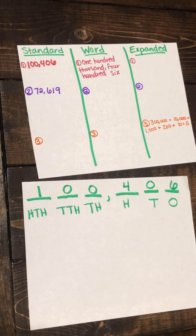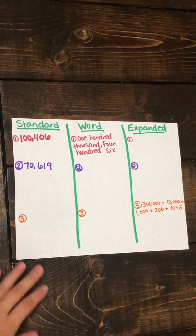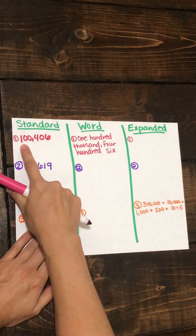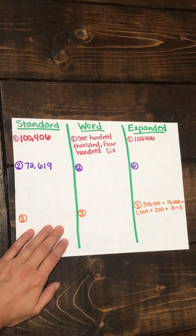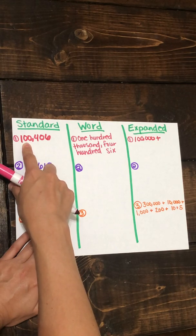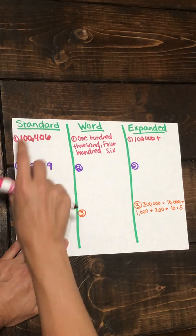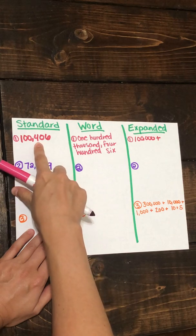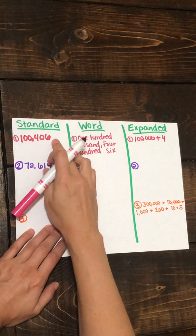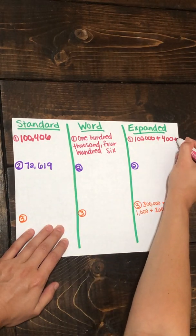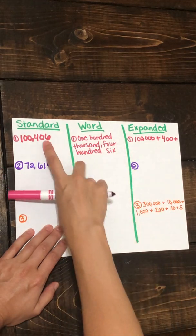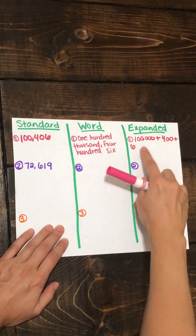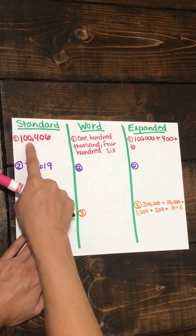Now for expanded form, let's look at our standard form to help us write it. Starting in our hundred thousands place, we have one in the hundred thousands place, everything else turned to zeros. We don't have a number in the ten thousands or thousands place, so we skip those. Our next value is four in the hundreds place — everything else gets turned to zeros, so we have four hundred. We don't have a value in our tens place, so we skip that. Then we have six in the ones place. So we have 100,000 plus 400 plus 6.